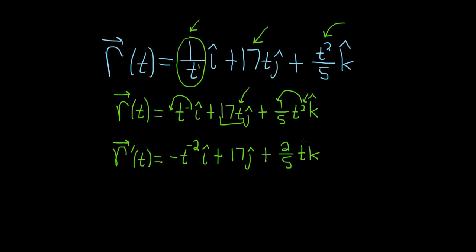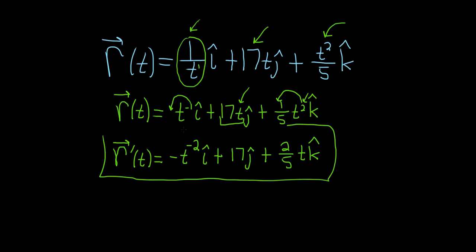So plus (2/5)t k̂. And that would be the final answer — that would be the derivative of the vector-valued function.